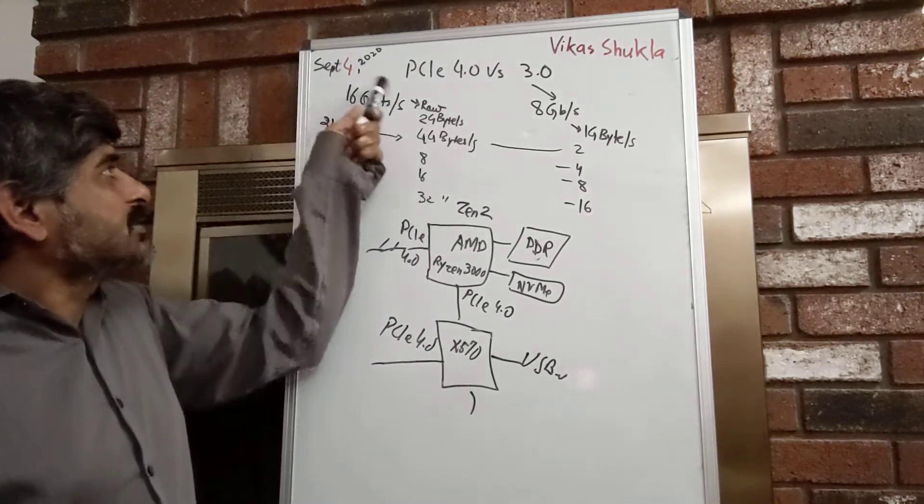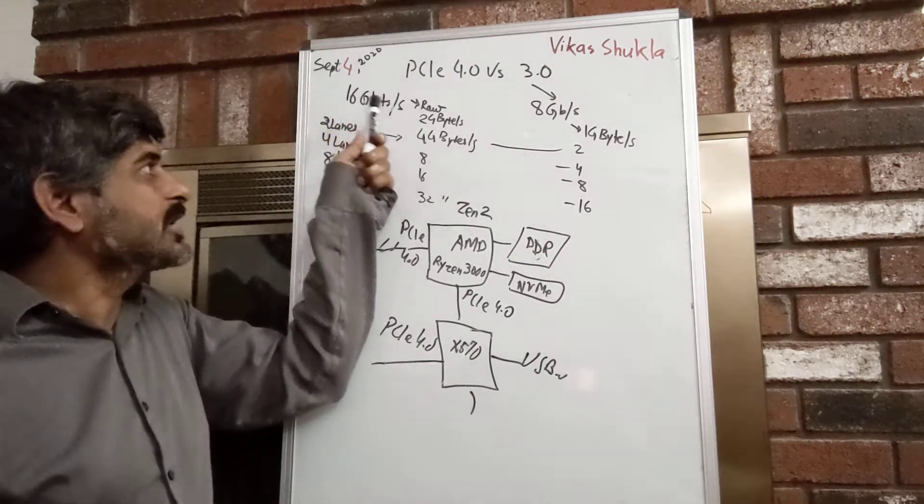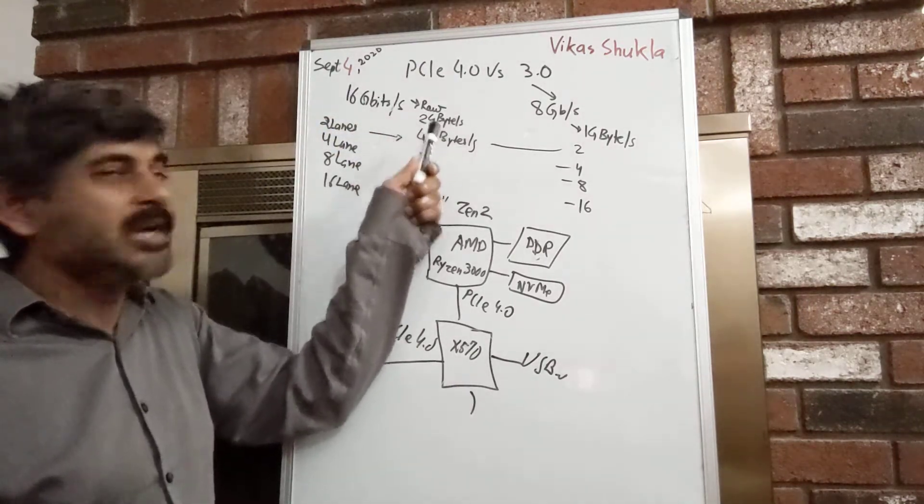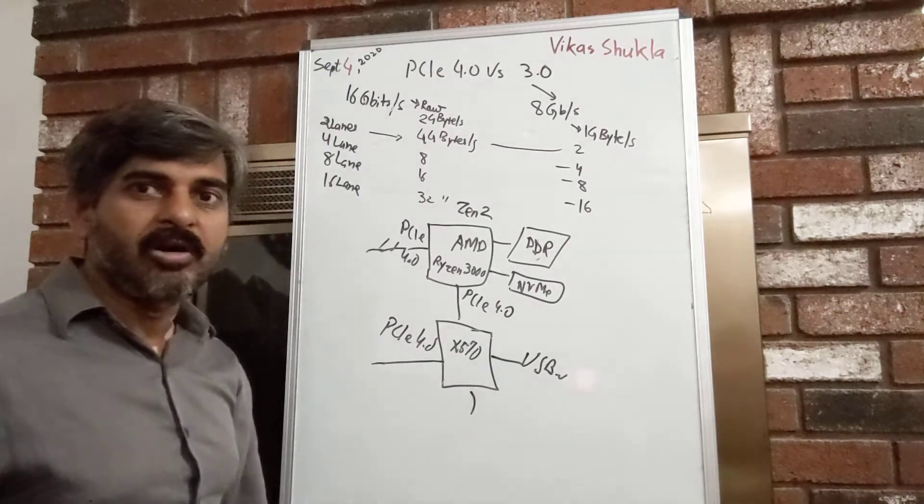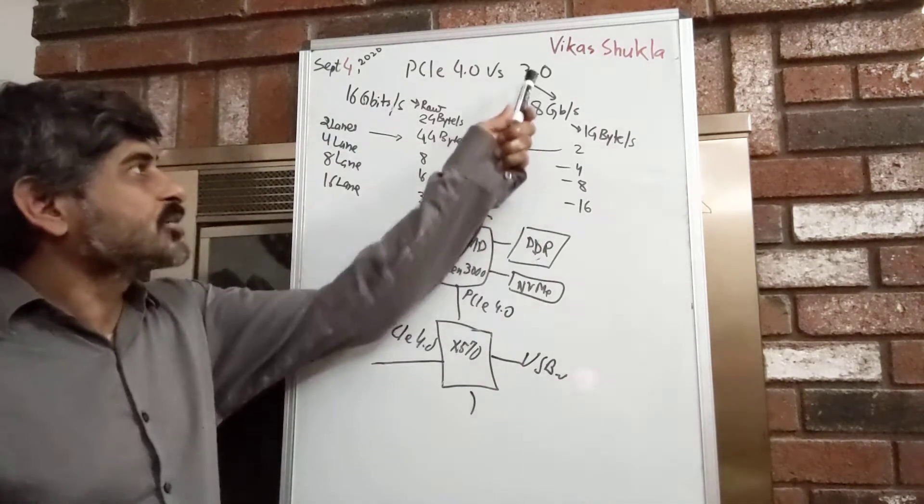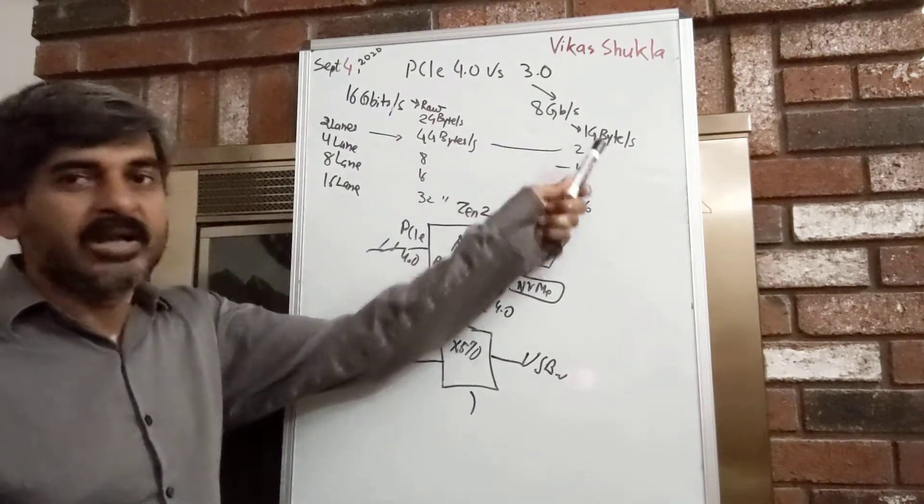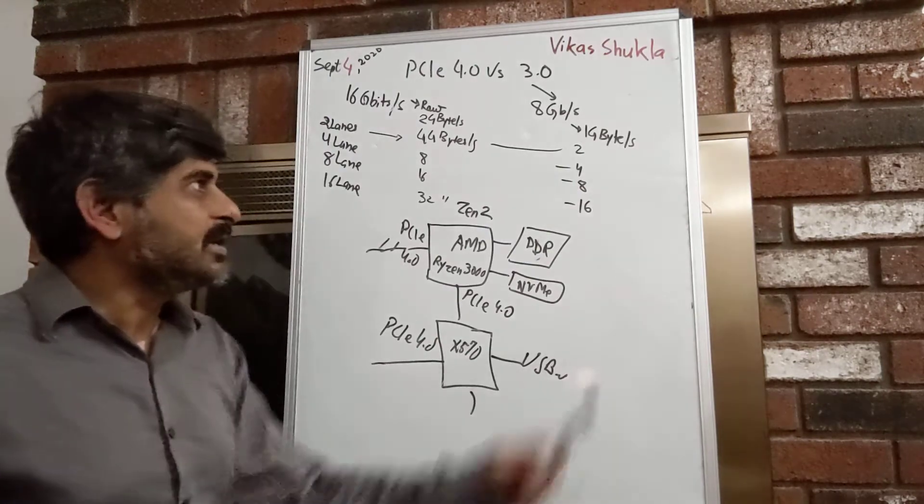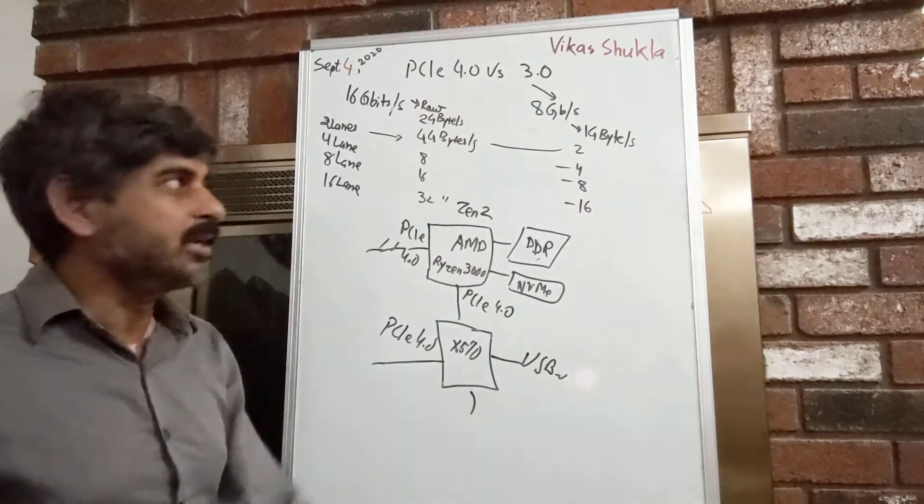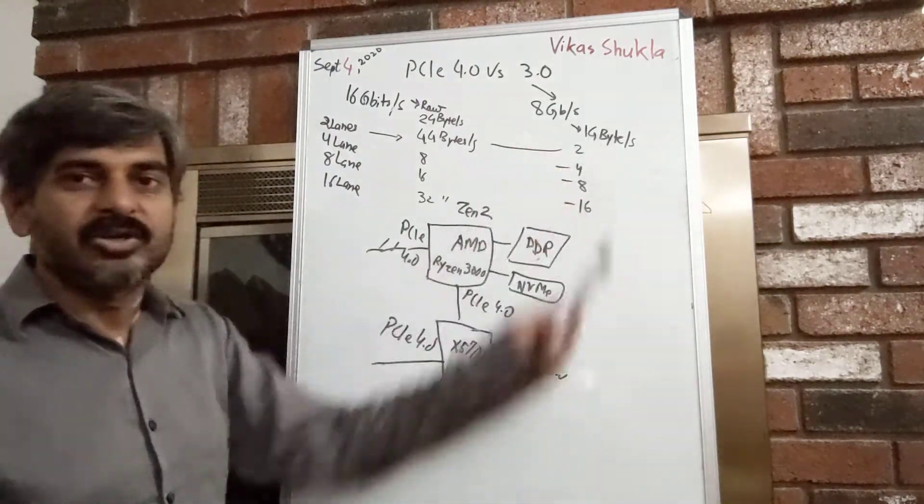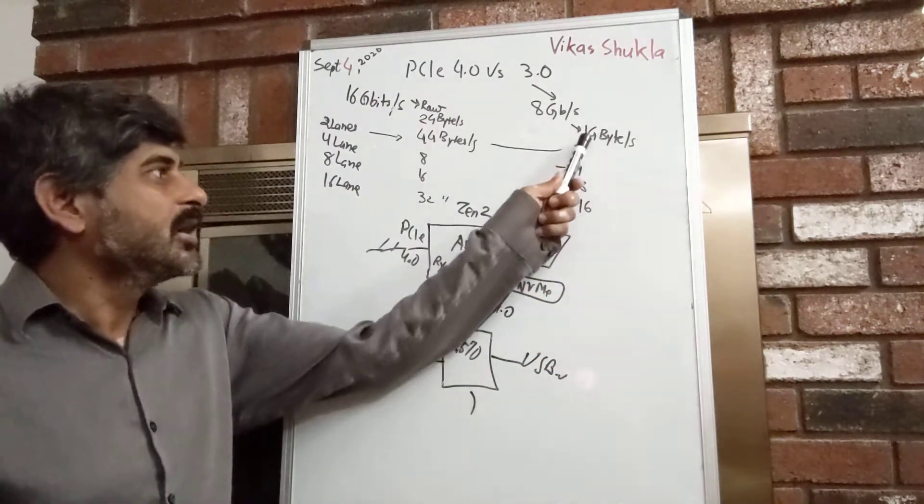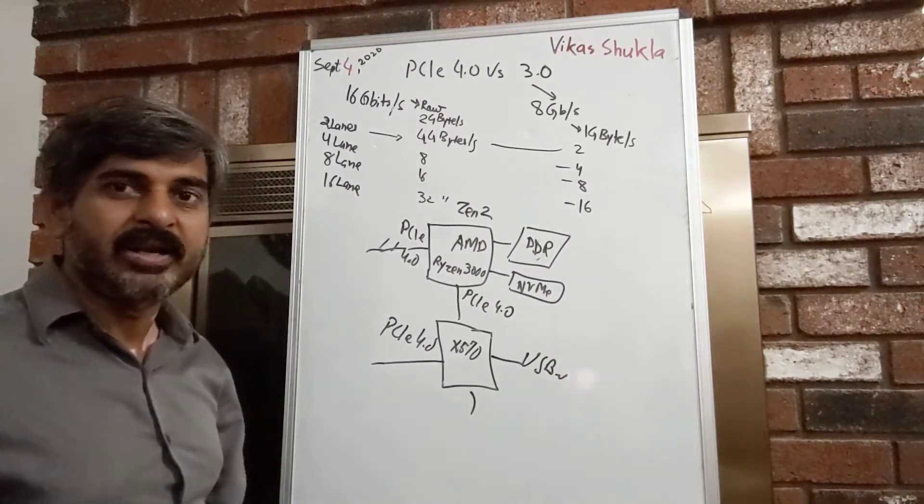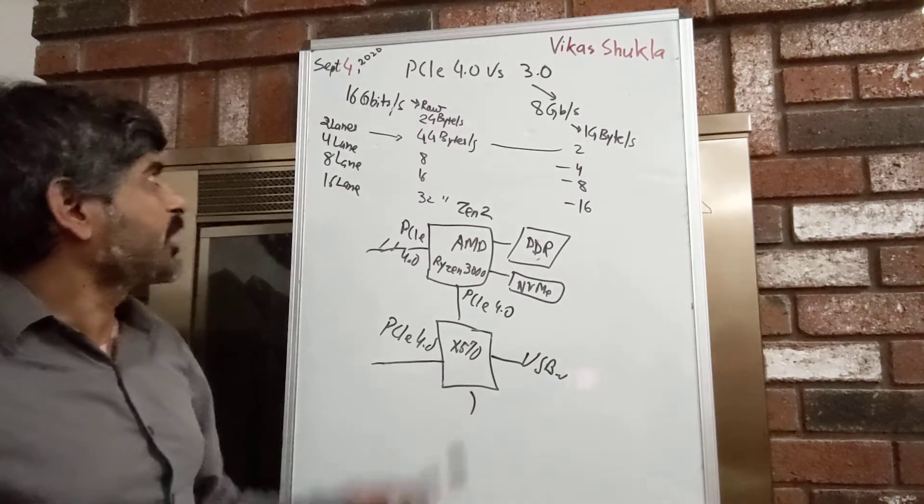And if you use, so that 16 gigabits per second translates to roughly 2 gigabytes per second or less than that. And in case of PCI 3.0, that will translate to slightly less than 1 gigabyte per second. And if you use the exact thing, the raw transfer data rate will be 1 gigabyte per second, the rate at which the electrical signals will be propagating.